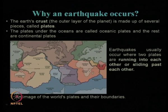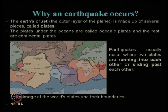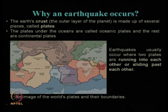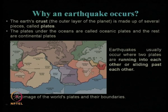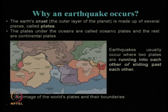As far as the tectonic plate movement is concerned, we have seen that earth's crust is made up of several pieces, which are called plates. There can be oceanic plate and continental plate — these are the two major categories of plates. These various plates move with respect to each other, and when two plates are running into each other or sliding past each other, earthquakes usually occur.